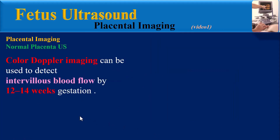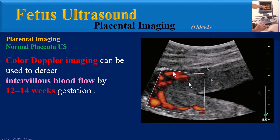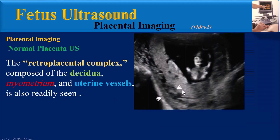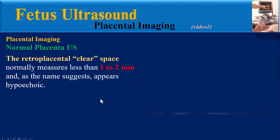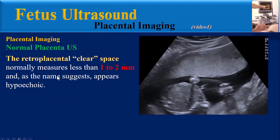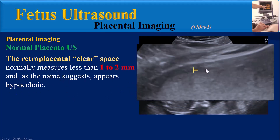Color Doppler imaging can be used to detect intervillous blood flow by 12 to 14 weeks gestation. This power Doppler image shows the myometrium, placenta, and intervillous flow in the placenta. The retroplacental complex, composed of the decidua, myometrium, and uterine vessels, is also readily seen. The retroplacental clear space normally measures less than 1 to 2 mm and appears hypoechoic.